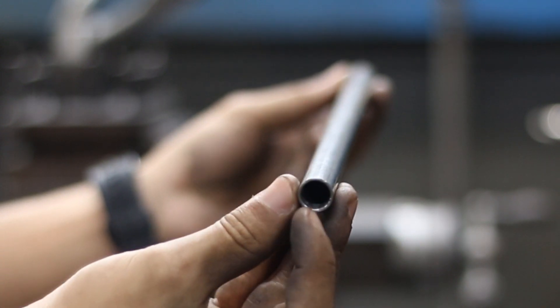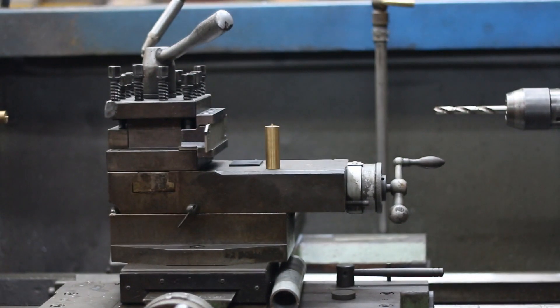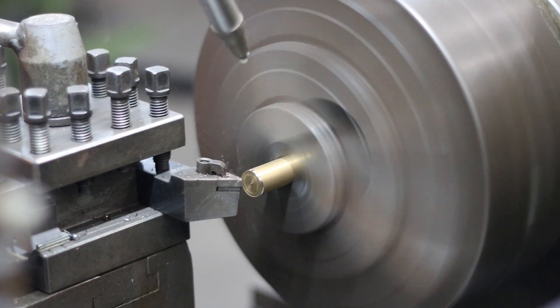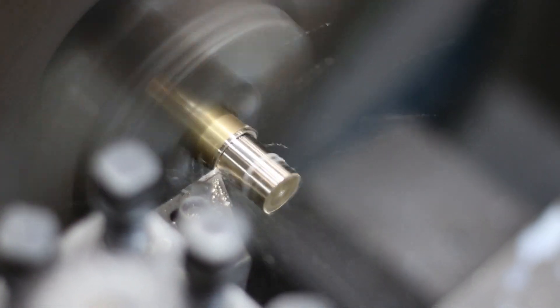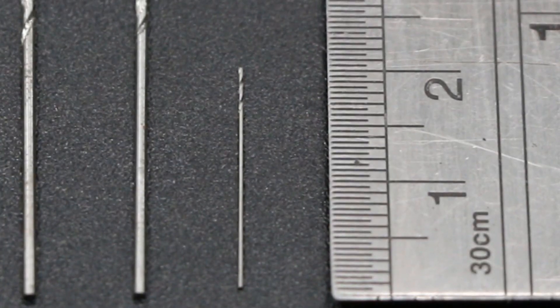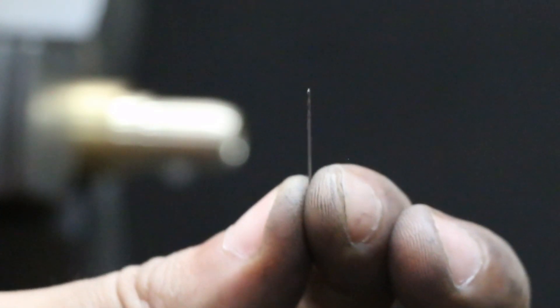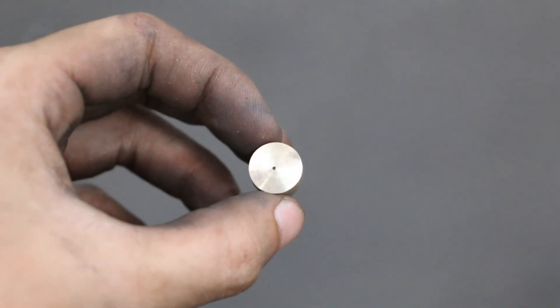And now it is time to make the gas nozzle using the brass. The head of the nozzle is drilled with a 0.8mm drill bit, as you can see.